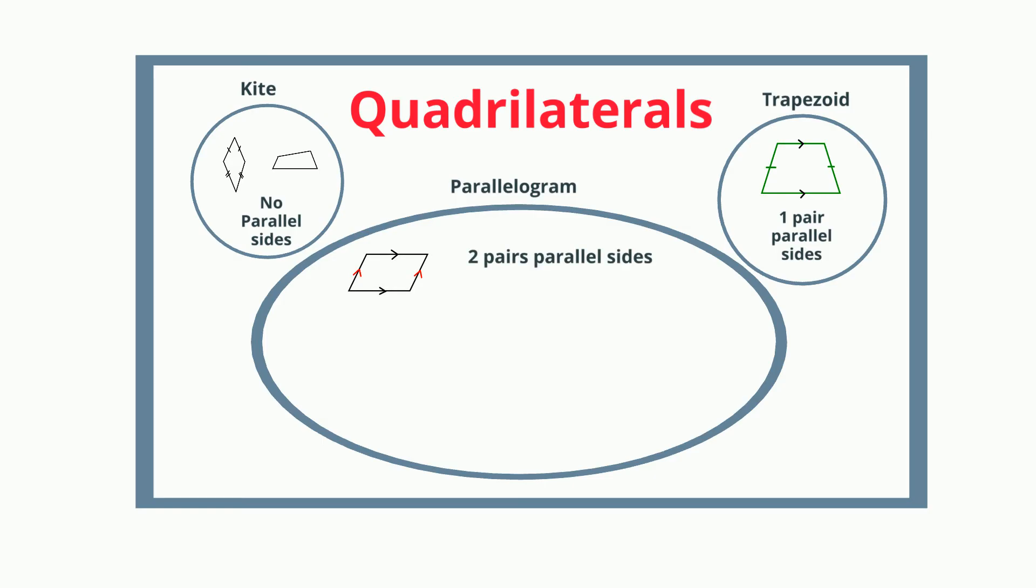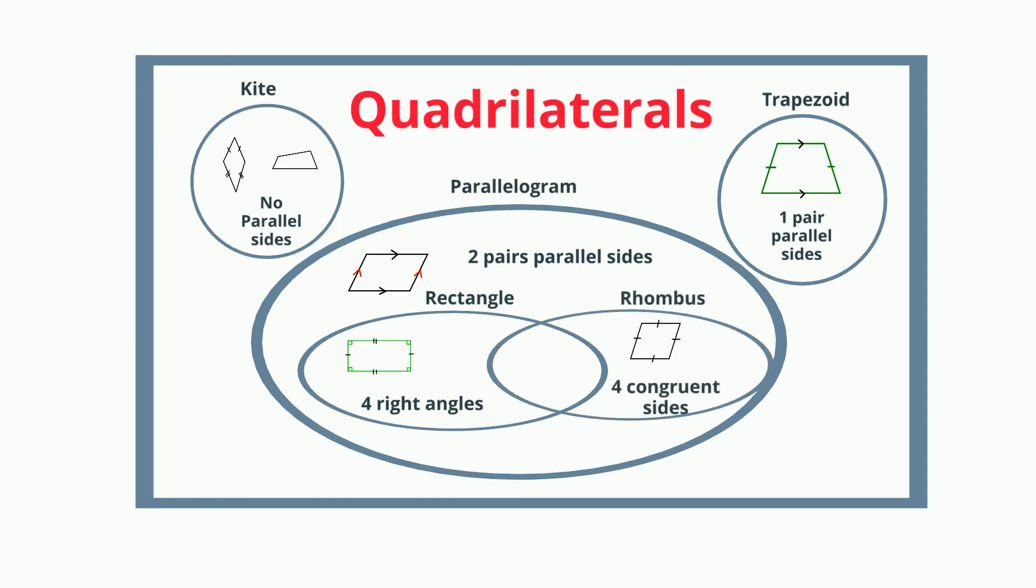A parallelogram with all right angles would be a rectangle. A parallelogram with four congruent sides is a rhombus. And then a square is a combination of both of these. You have a rectangle and a rhombus. So a square has all right angles and four congruent sides.